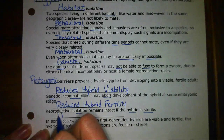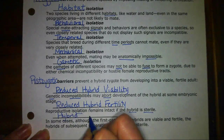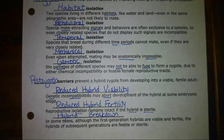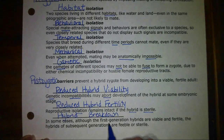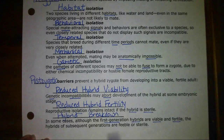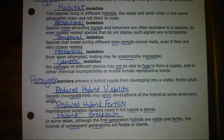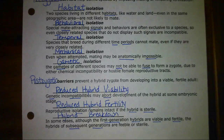The last postzygotic barrier is hybrid breakdown. If two organisms had no prezygotic barriers and were able to reproduce, and the first generation of hybrids were viable and fertile — everything seems fine — but then in subsequent, meaning future, generations the offspring do not survive or are sterile, that's an example of hybrid breakdown. Those two original populations are still considered reproductively isolated and two different species.